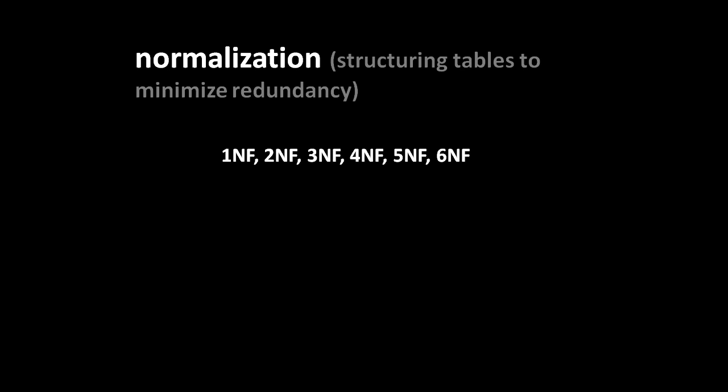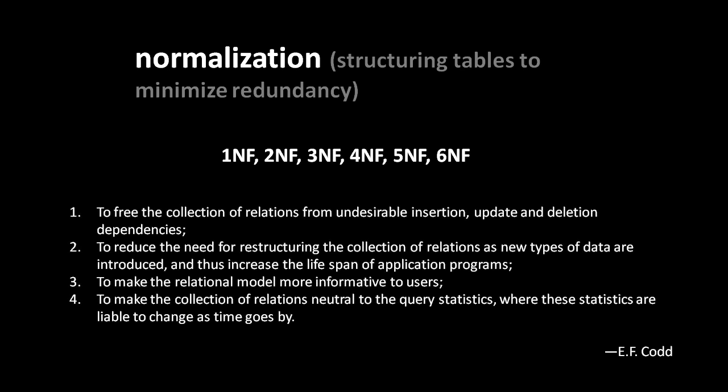Codd himself summed up the purpose of normalization succinctly. First, it frees the collection of relations from undesirable insertion, update, and deletion dependencies — 'relation' being Codd's term for what we call tables. A dependency is a scenario where modifying or inserting or deleting something from one table requires, for the sake of consistency, performing some other action on another table. While some such relationships are unavoidable, normalization aims to minimize them.